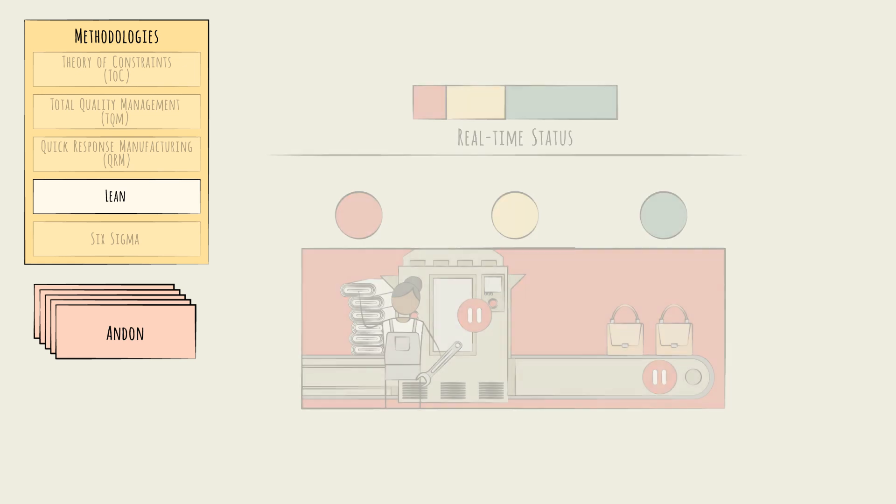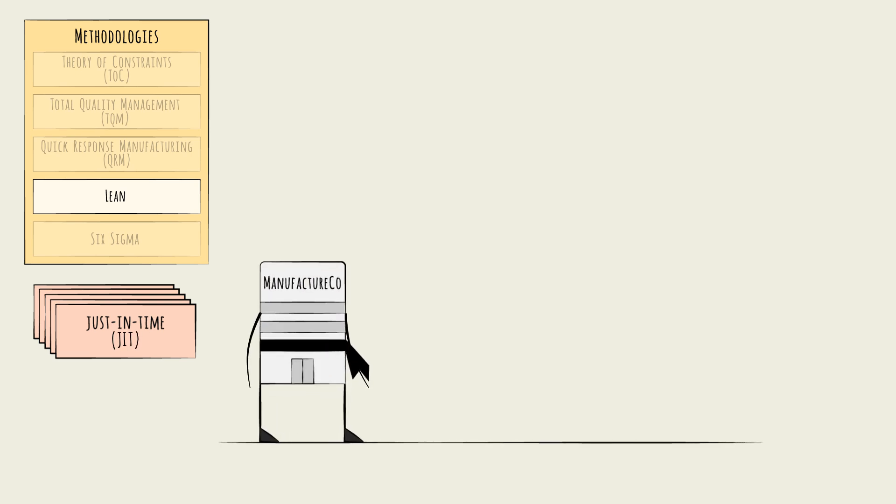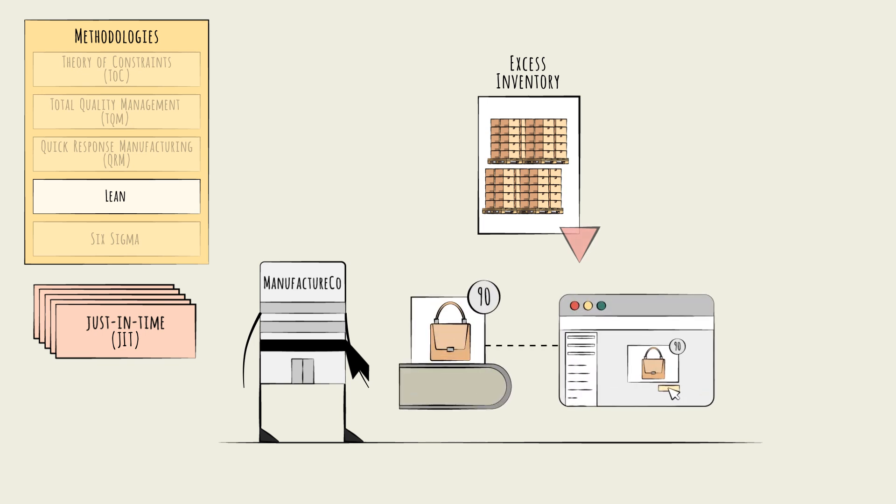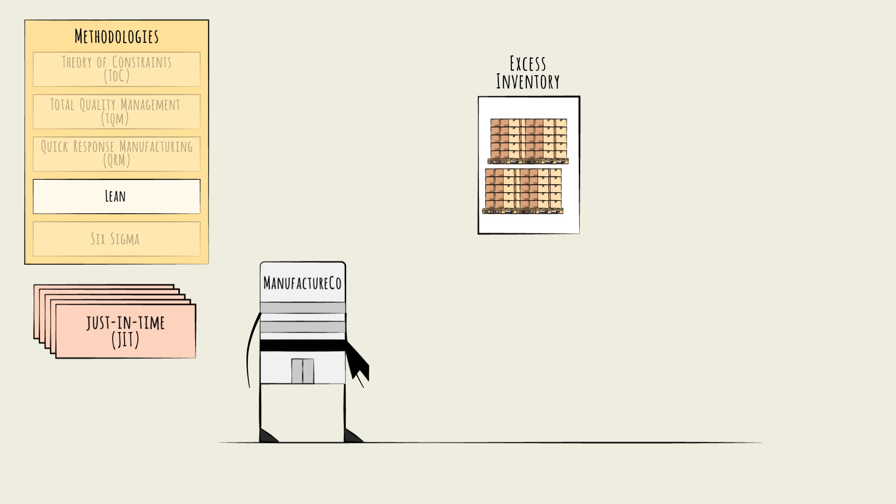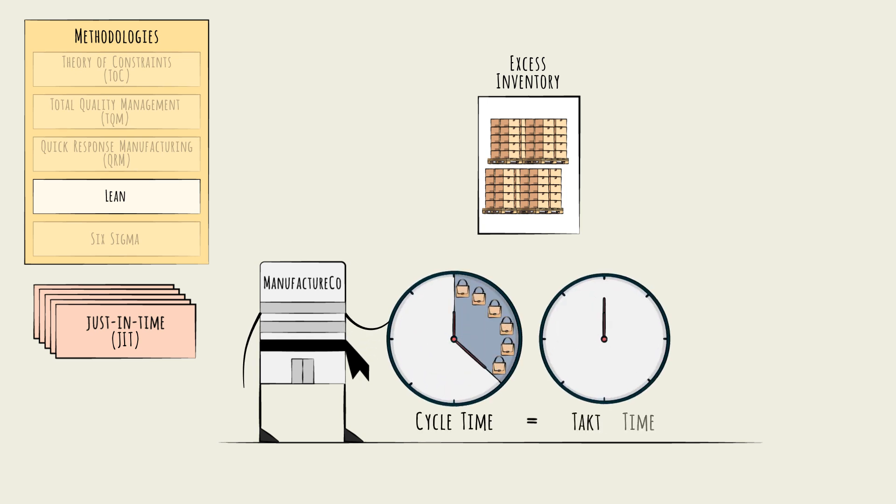Another strategy emphasized in Lean is just-in-time manufacturing, or JIT. JIT is a core pillar of Toyota's system. Its goal is to reduce inventory waste by waiting to produce items until the moment they're needed. In terms of key metrics, JIT means matching the cycle time, actual production time per unit, with the tact time, the production time per unit needed to keep up with but not exceed demand.